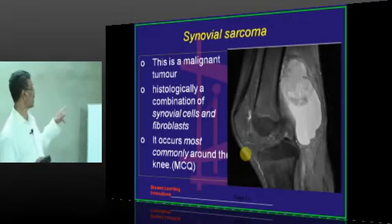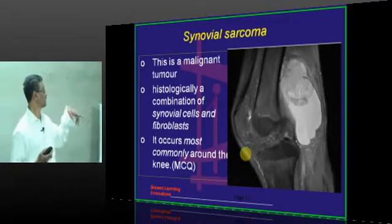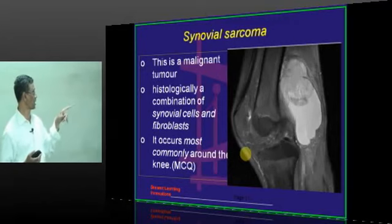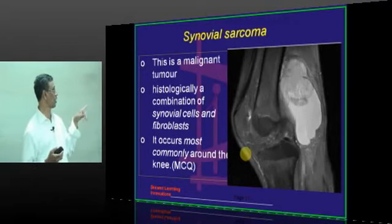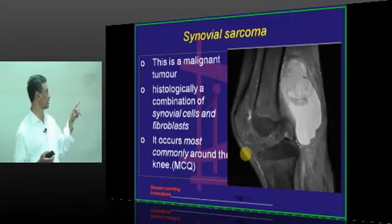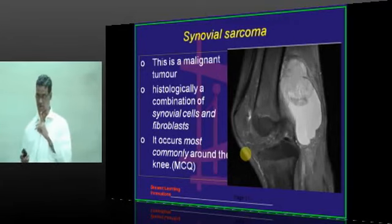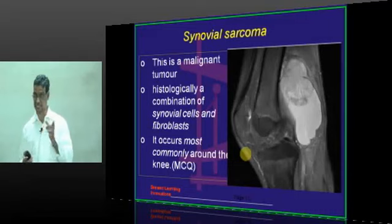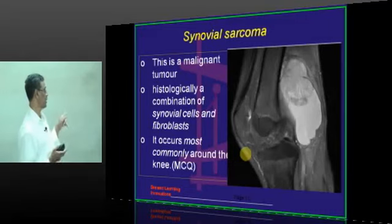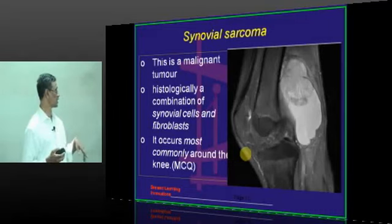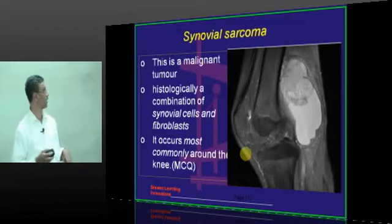Synovial sarcoma is a malignant tumor, histologically a combination of synovial cells and fibroblasts, so it is majorly a connective tissue element. It occurs most commonly around the knee.